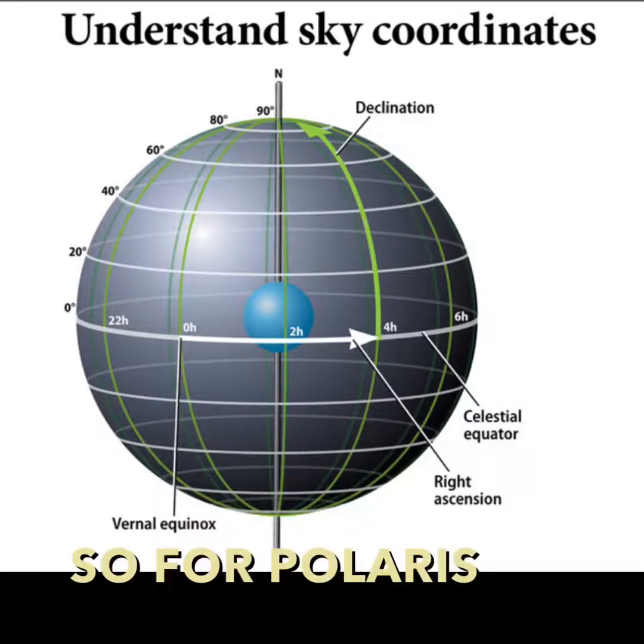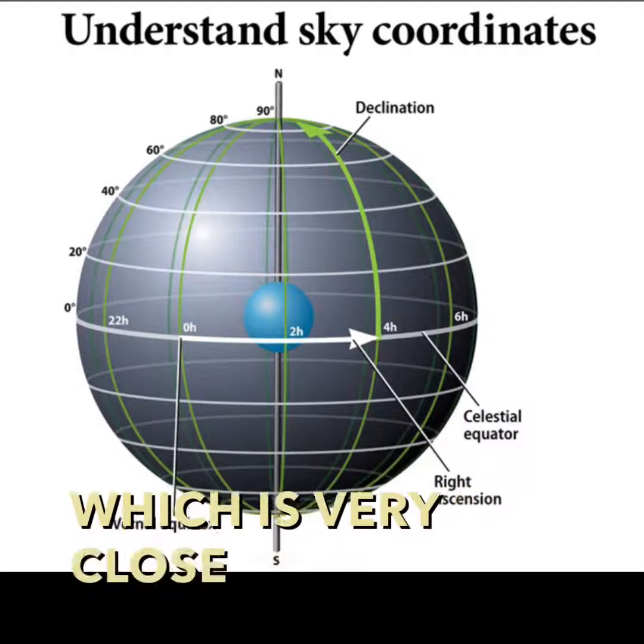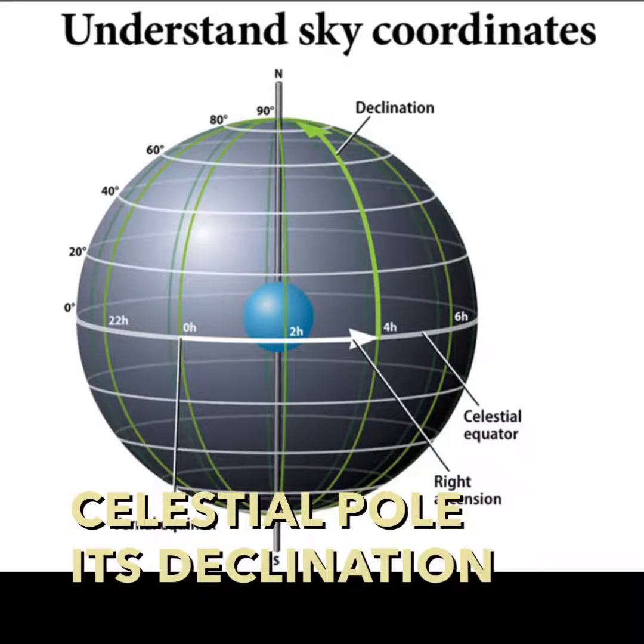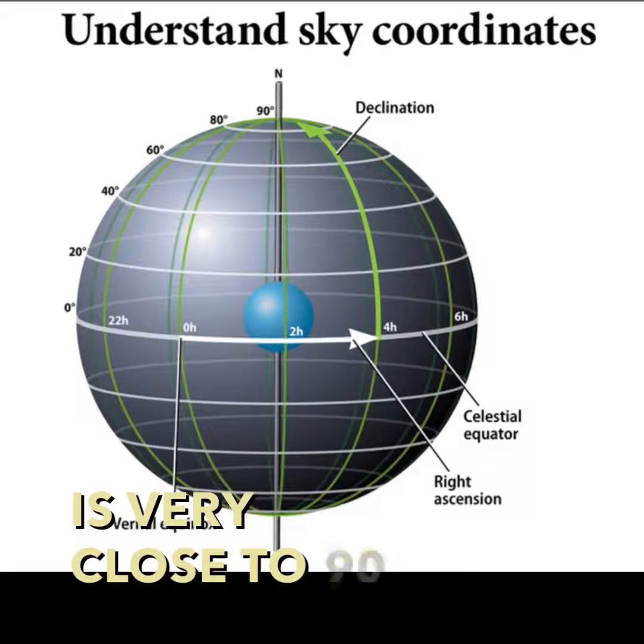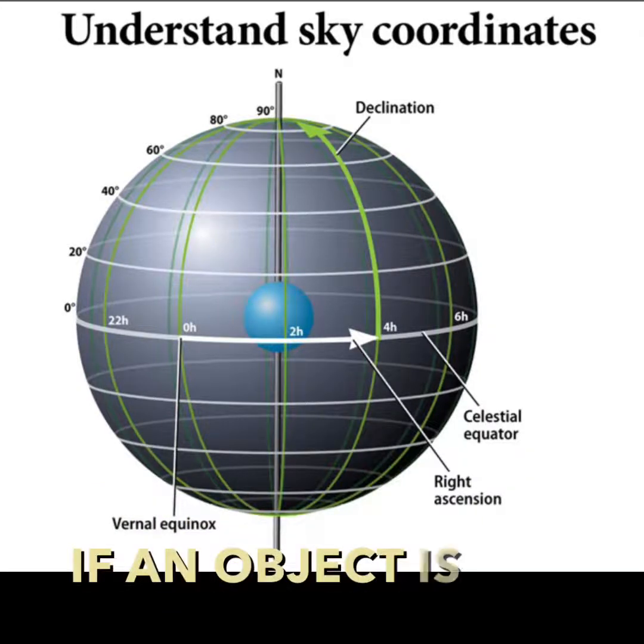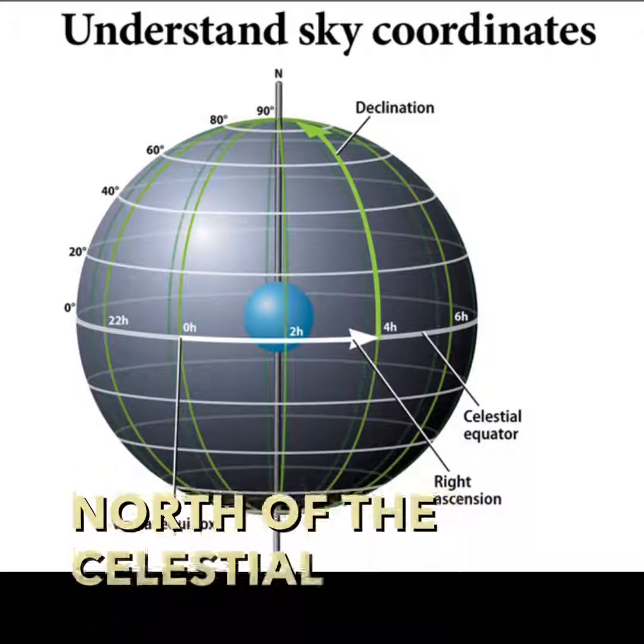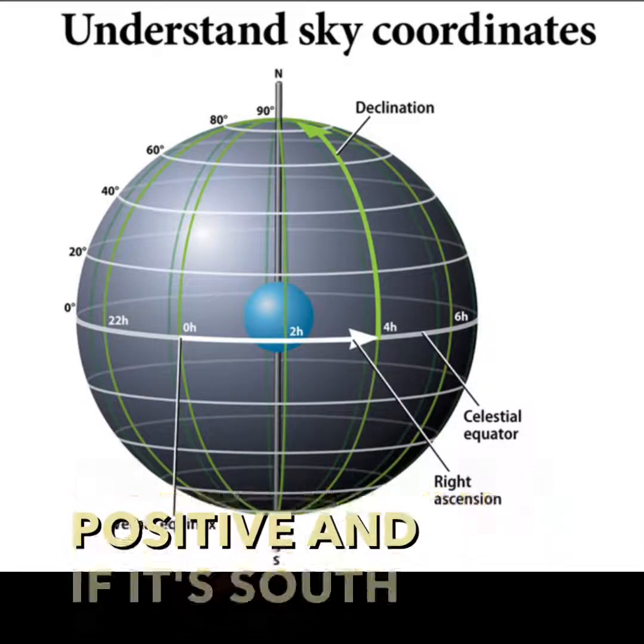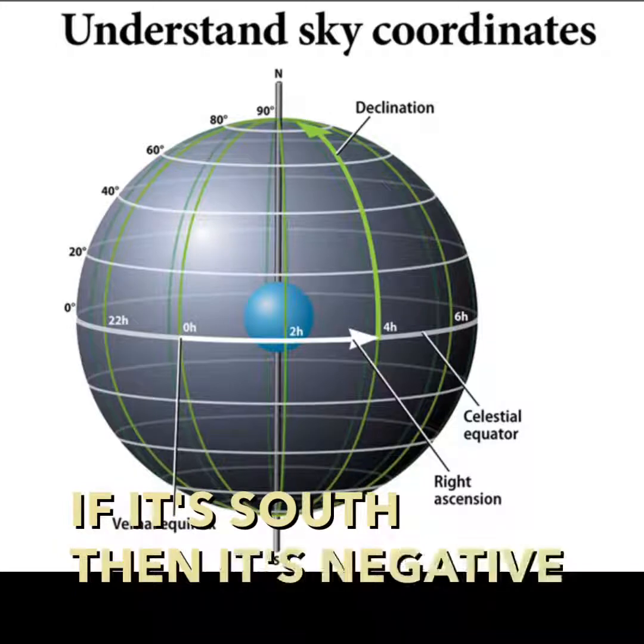So for Polaris which is very close to the north celestial pole, its declination is very close to 90 degrees. If an object is north of the celestial equator its declination is positive and if it's south then it's negative.